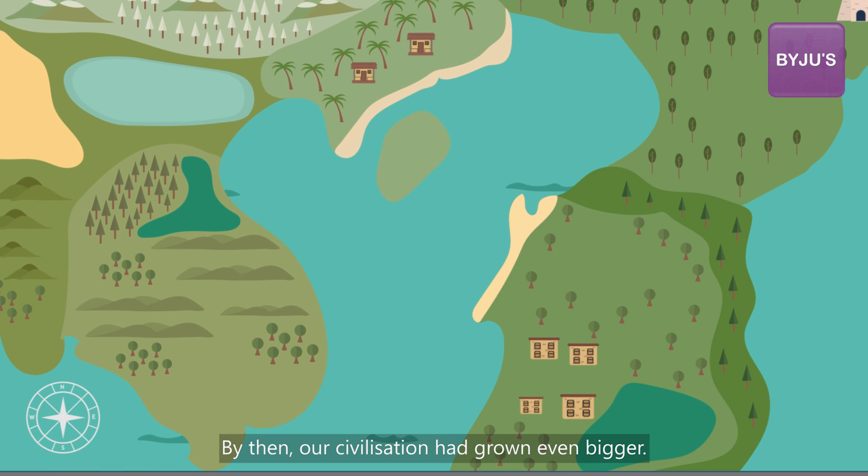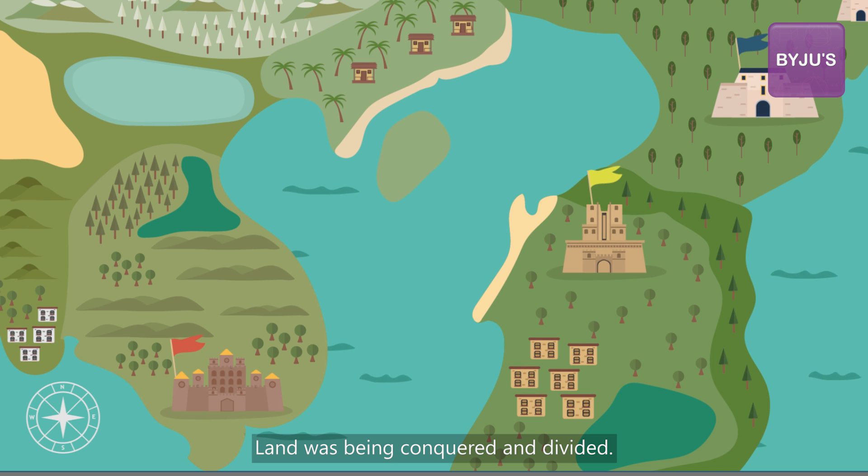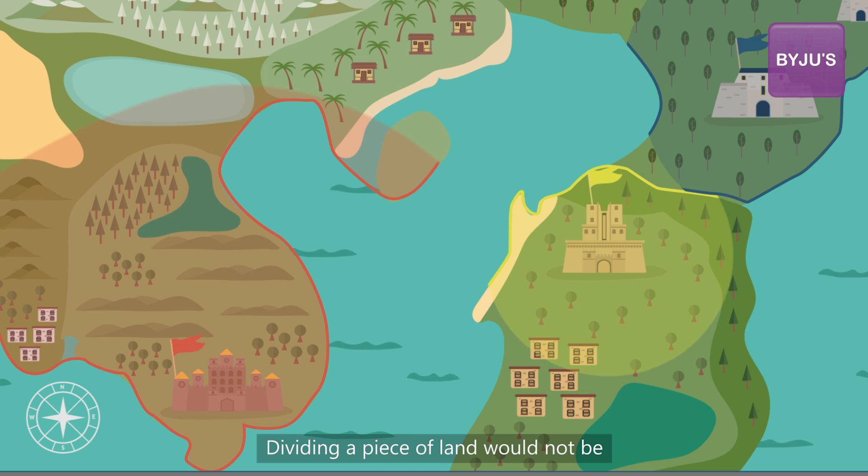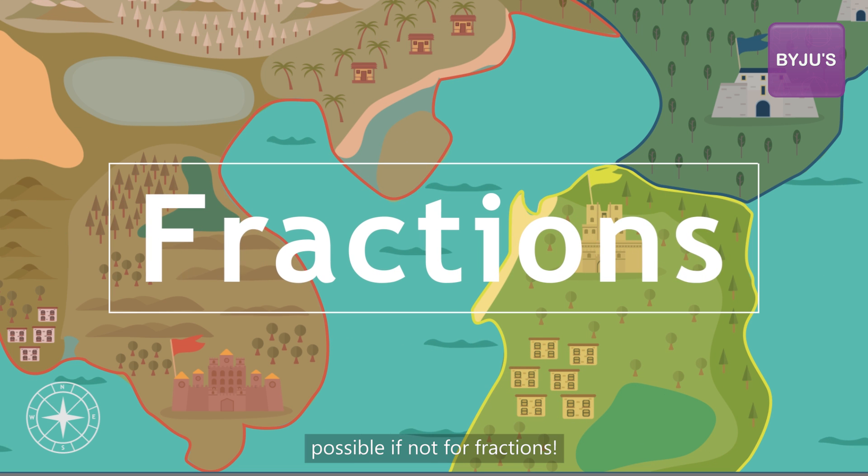By then, civilization had grown even bigger. Land was being conquered and divided. Dividing a piece of land would not be possible if not for fractions.